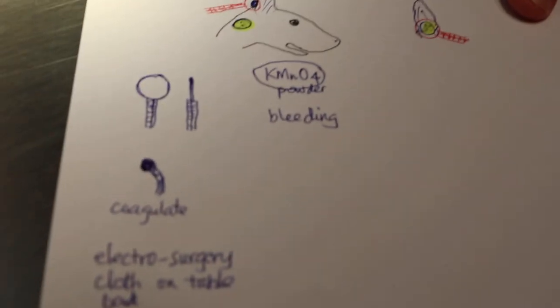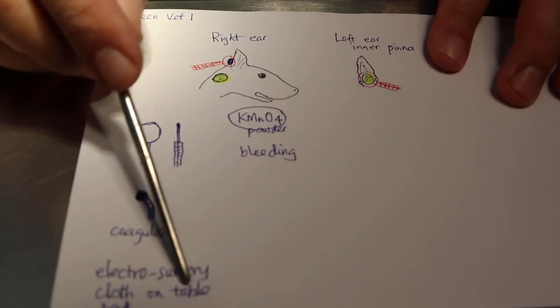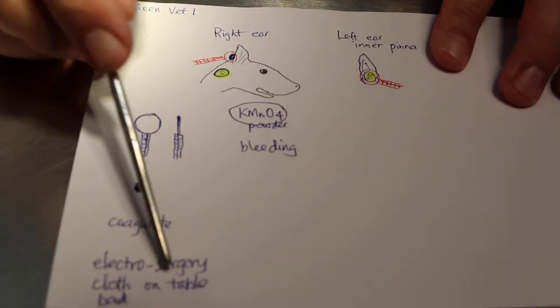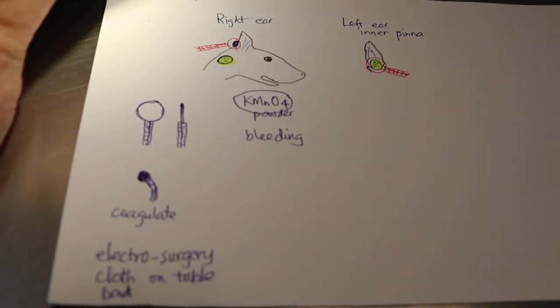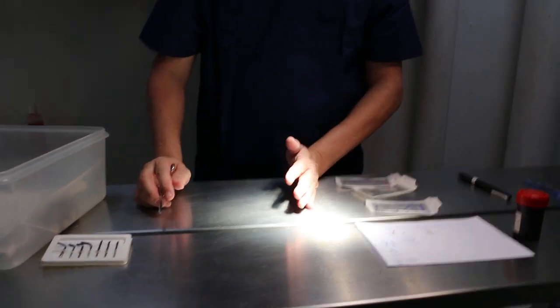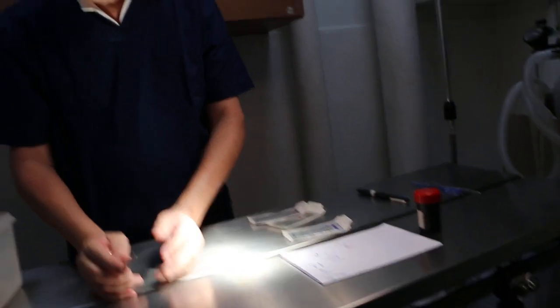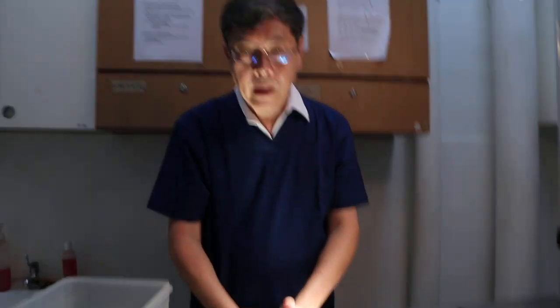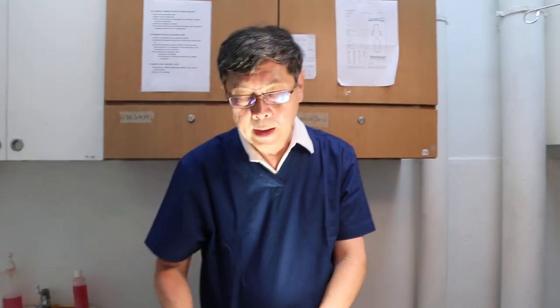Now, the other thing is you need to have a cloth on the table so that the vet wouldn't get electroshock, electrical shock. Because sometimes the hand touches the metallic operating table. You can see here. So, you put a cloth here. Then at least when you operate it touches the cloth and does not touch the metallic table which would cause electric shock.